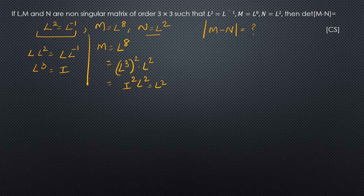N is already given as L squared. So M minus N equals L squared minus L squared equals the zero matrix. Therefore the determinant of M minus N equals 0.